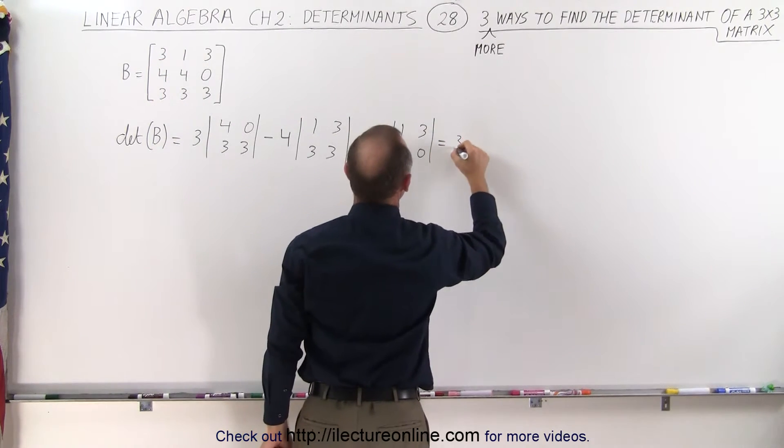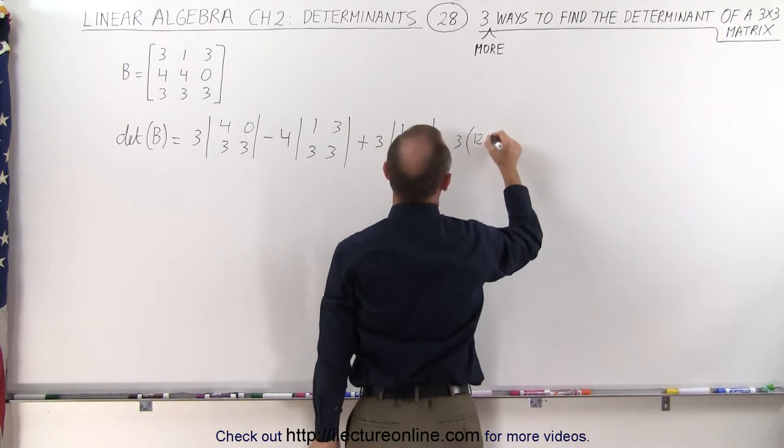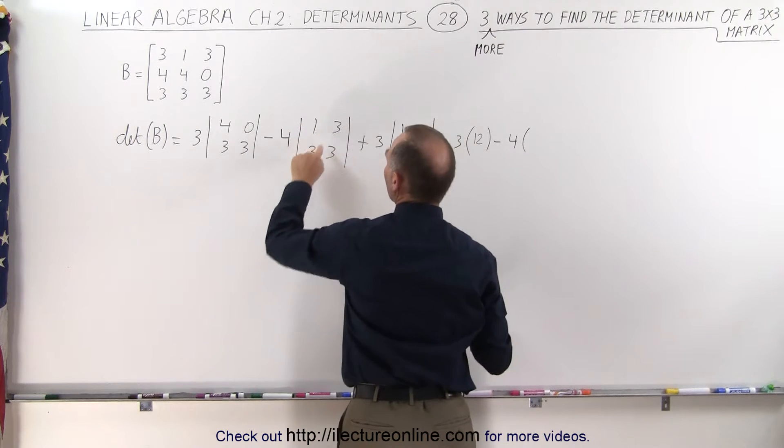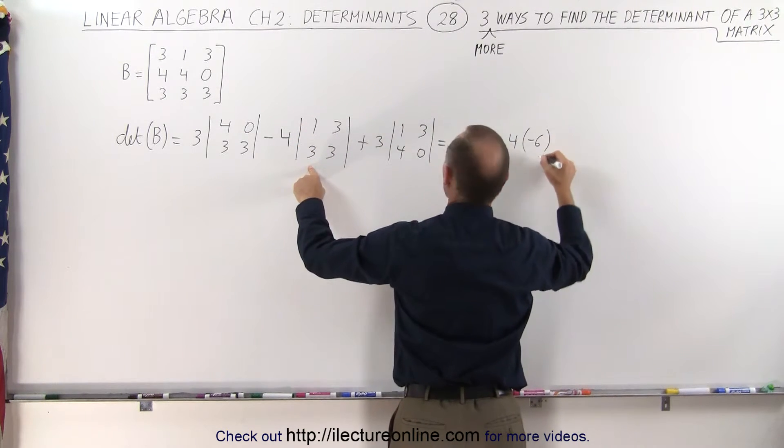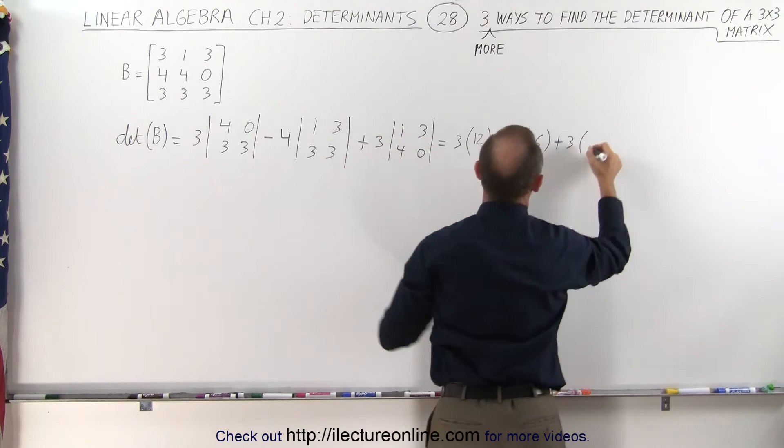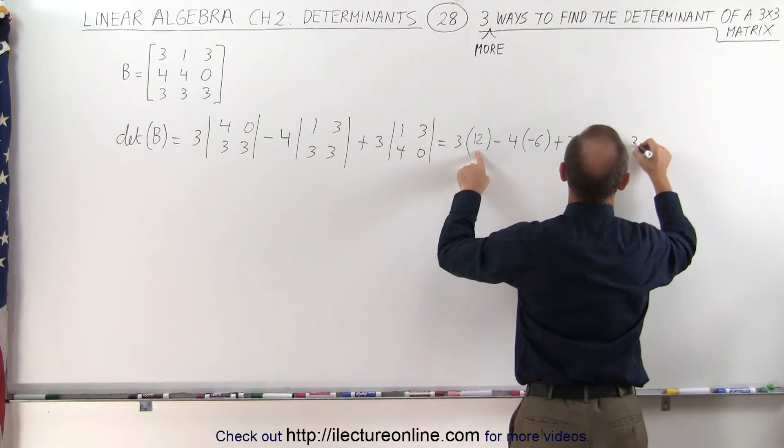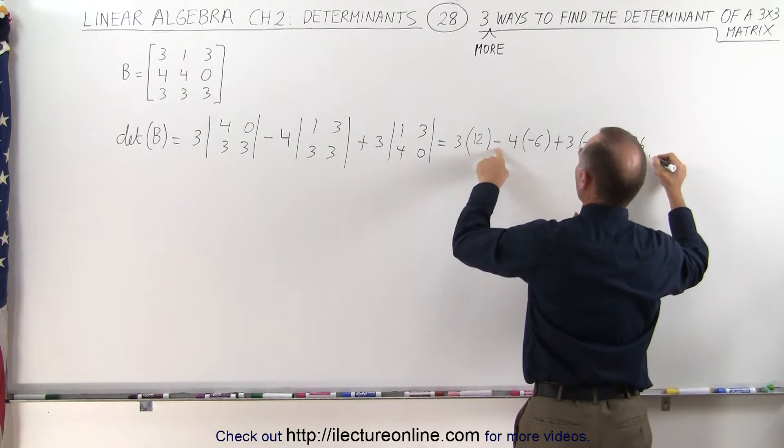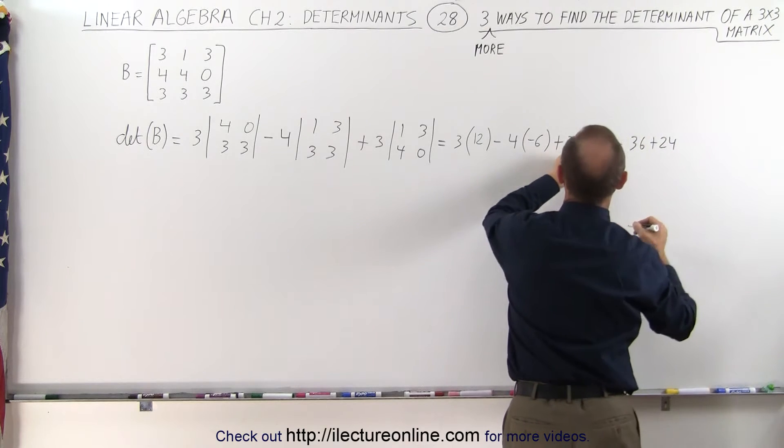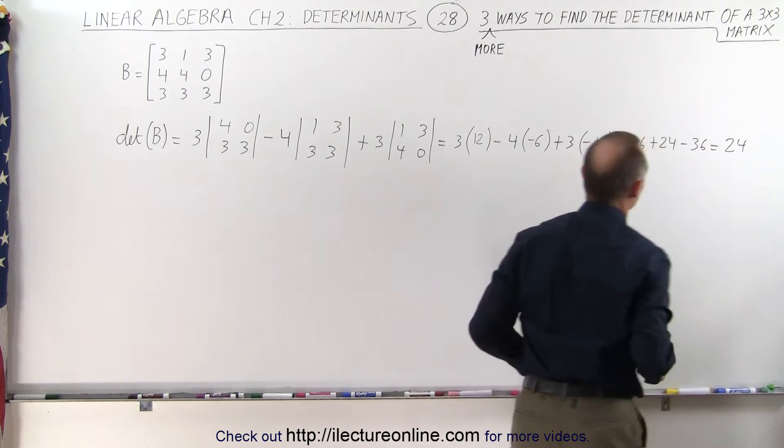So this gives us 3 times 12 minus 0, minus 4 times 3 minus 9, that's a minus 6. And here we get plus 3 times 0 minus 12, that's a minus 12, which is equal to 36 minus 4 times the minus 6 is a plus 24, and 3 times the minus 12 is a minus 36, which is 24.